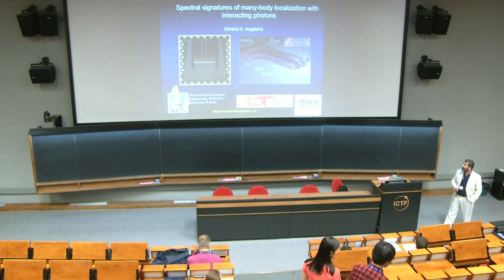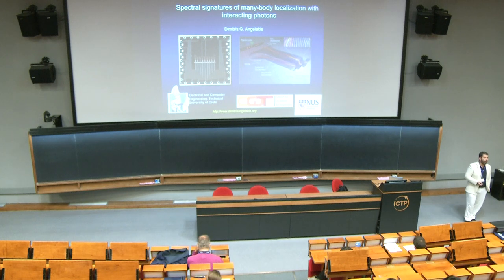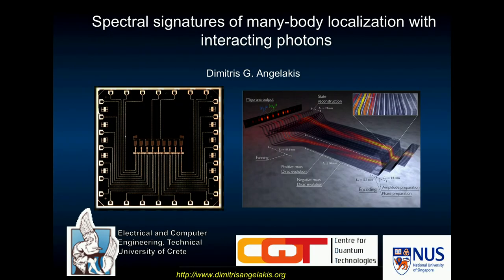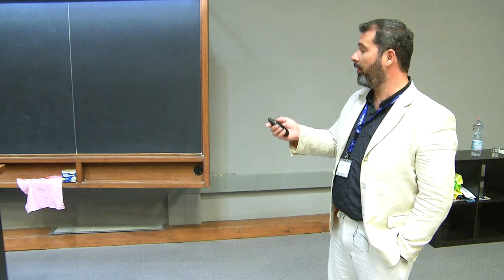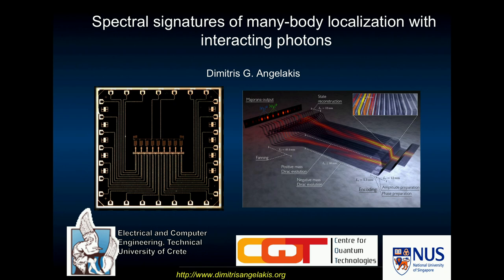I would like to start as usual by thanking the organizers for inviting me here. It's a great place to be again. Not great weather, unfortunately, this week, but hopefully we'll improve later. I will try to give a brief overview. The main part of this talk is about a recent experiment we did with the Google USP Group, improving MBL physics in superconducting qubits. The idea is to use interacting photons as the main player here. I will give a brief review of what interacting photons for quantum simulations are, and then I will get into the main part.